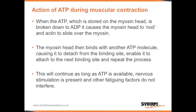The action of ATP during muscular contraction. When the ATP stored on the myosin head is broken down to ADP, it causes the myosin head to nod and the actin to slide over the myosin. The myosin head then binds with another ATP molecule, causing it to detach from the binding site. This enables it to attach to the next binding site and repeat the process. This will continue as long as ATP is available, nervous stimulation is present, and other fatiguing factors do not interfere.